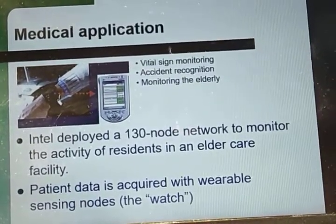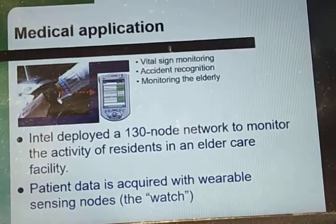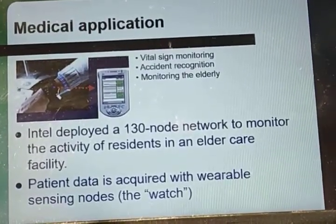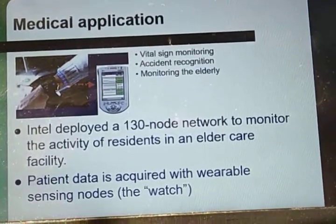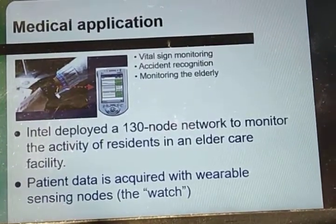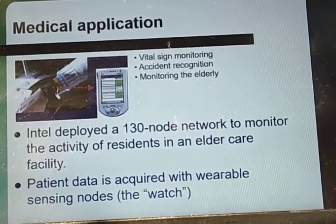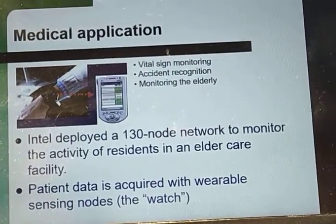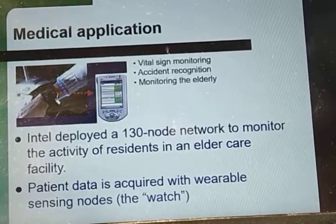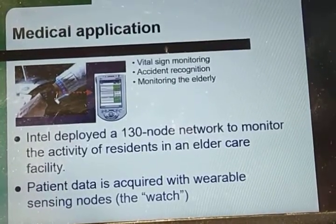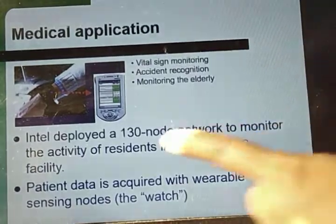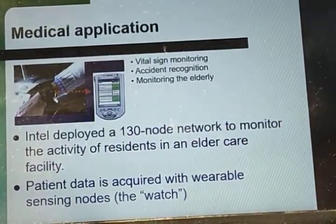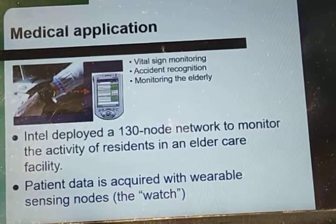For medical or healthcare applications, these sensors can be used in biomedical applications to improve the quality of healthcare provided. These sensors are implanted into the human body — as already seen in wireless body area networks (W-BAN) — to monitor medical problems such as cancer and help patients maintain their health. Intel has developed a 130-node network to monitor the activity of residents in an elder care facility.